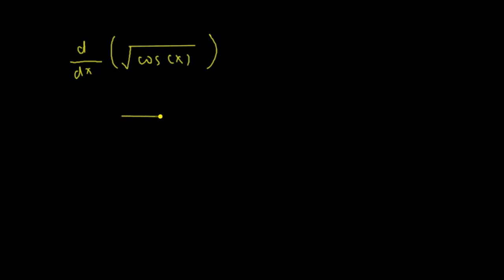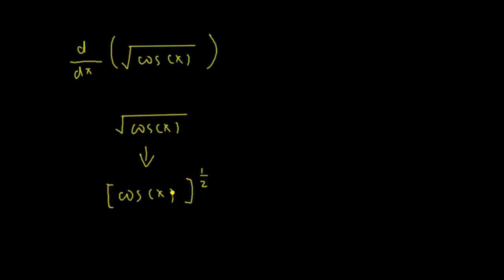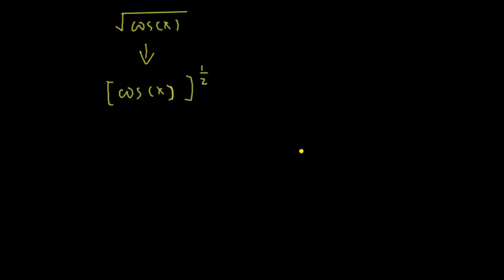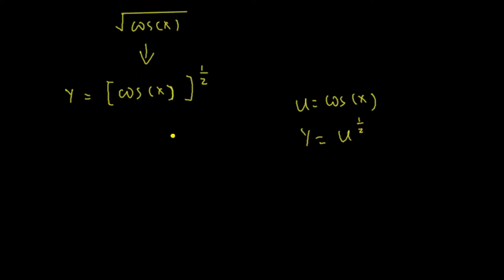Now let's look at the square root of cos. You can write this as cos to the power of 1 half. It's the function cos inside another function to the power of 1 half, so we use the chain rule. Let y equal to this function, and let u equal to cos. Then y must equal u to the power of 1 half.